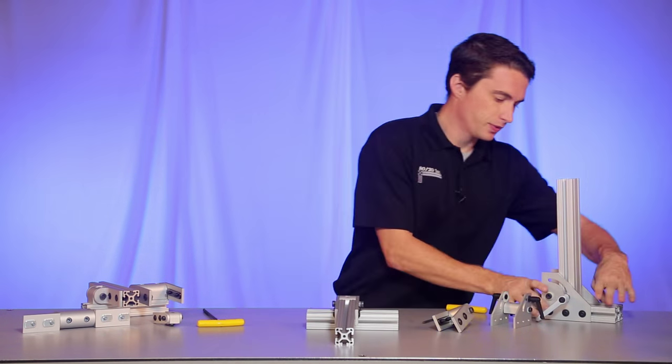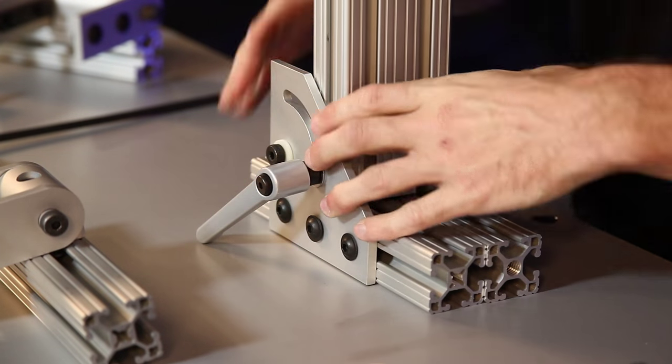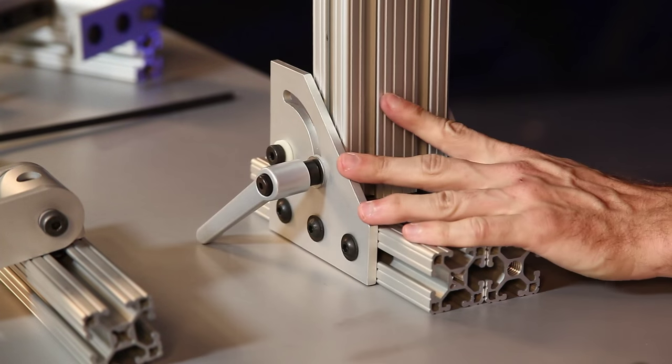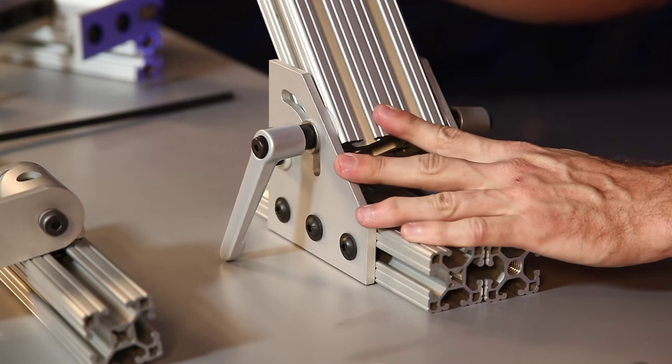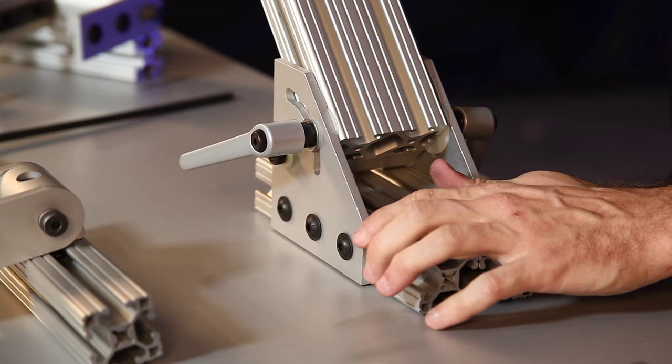Now lastly, we want to mention that dynamic pivots can come with brake handles. You simply loosen up your brake handle, move your profile into the desired location that you want, and you can tighten that brake handle back down, and it'll hold it right into position for you.